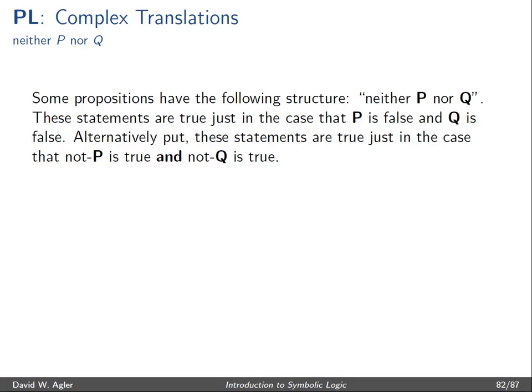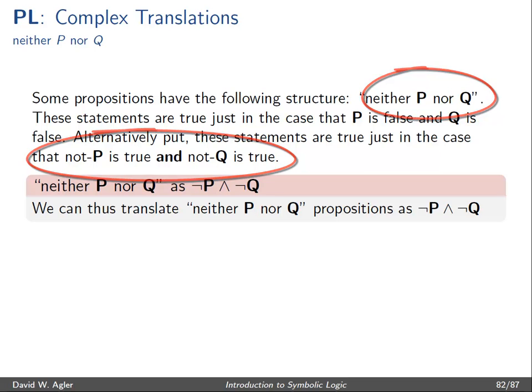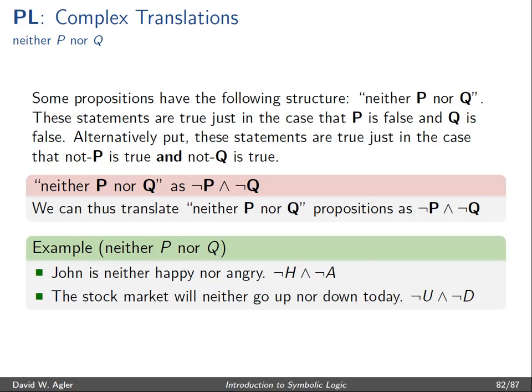Moving on to statements involving 'neither P nor Q'. Some propositions in English have the structure 'neither P nor Q'. These statements are true just in the case that P is false and Q is false — that neither of the two are the case. To say 'neither P nor Q' is to say that 'not P' is true and 'not Q' is true, so we translate it as ¬P ∧ ¬Q. For example, 'John is neither happy nor angry' translates as ¬H ∧ ¬A, and 'the stock market will neither go up nor down today' translates as ¬U ∧ ¬D.